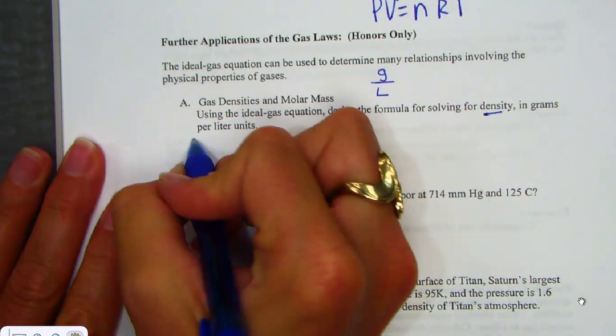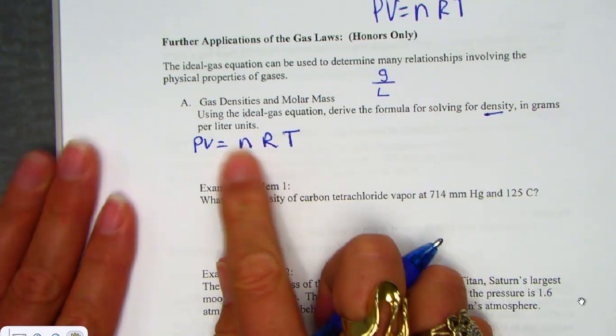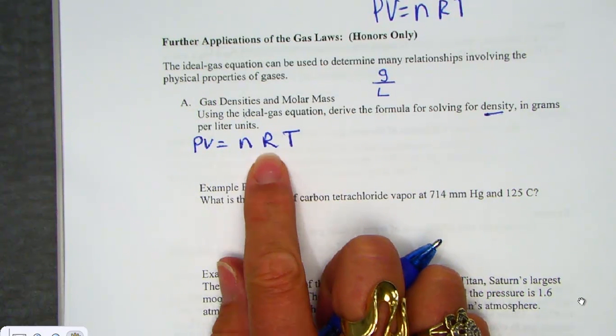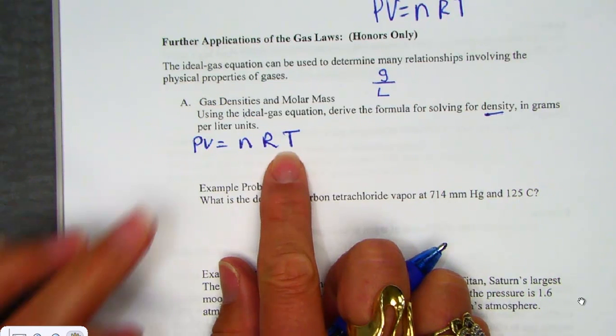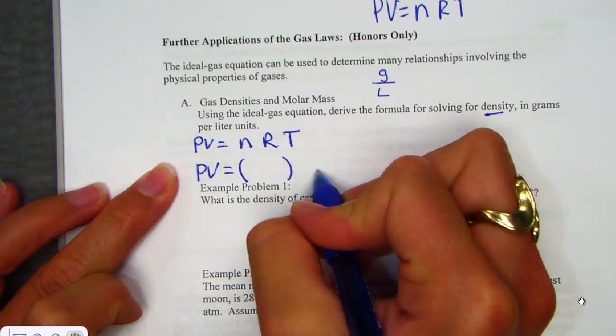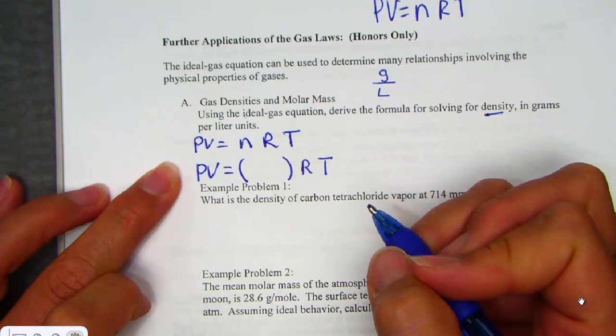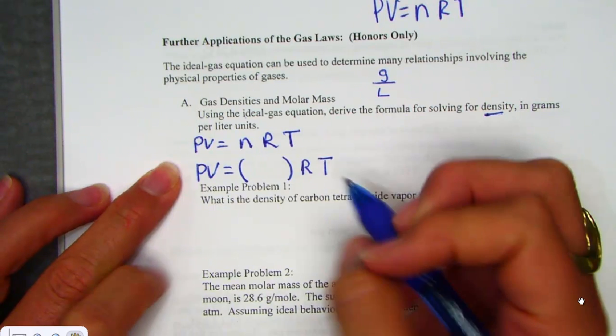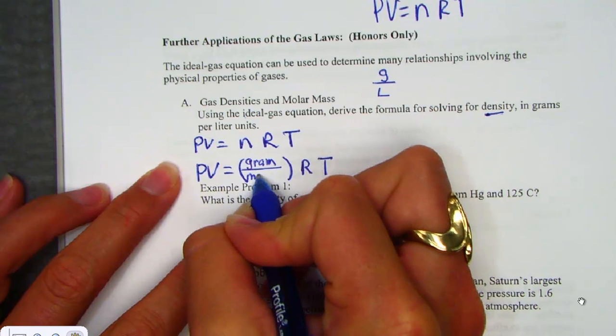Well, if we think about what we know, PV equal nRT, pressure, volume, n the number of moles, R is our gas constant, and T is the Kelvin temperature, we could think about inside of that parenthesis called n, the number of moles, really a relationship from an old-fashioned mole map problem. We know that to be grams over molar mass.